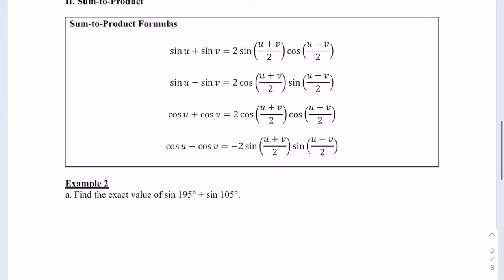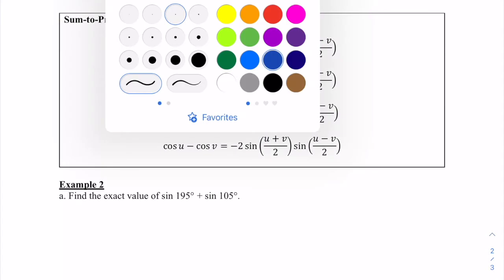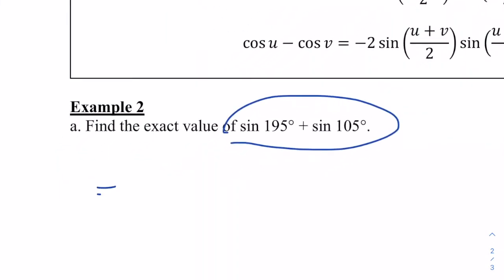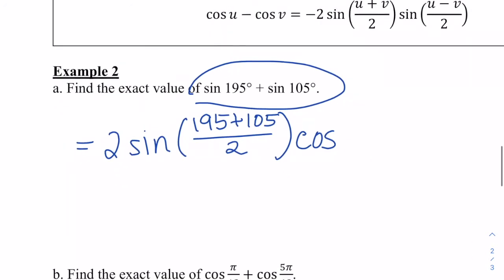For the next example, we're going to look at the sum-to-product formulas. This is really important, especially when combining terms. If we have sine of 195° plus sine of 105°, we're going to change that sum into a product: 2 times the sine of the average of the two angles, times the cosine of half the difference. So this equals 2 times sine of (195 + 105)/2, times cosine of (195 − 105)/2.